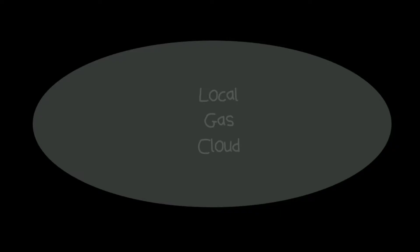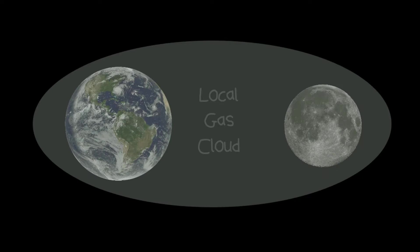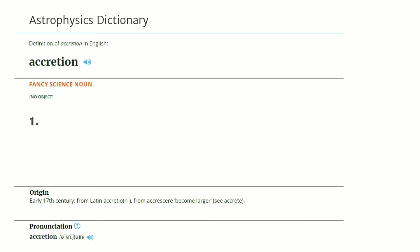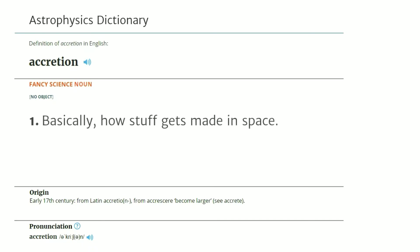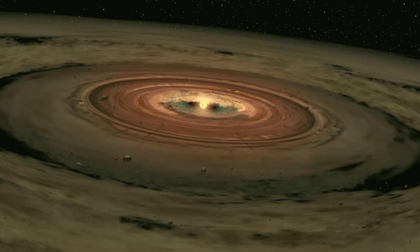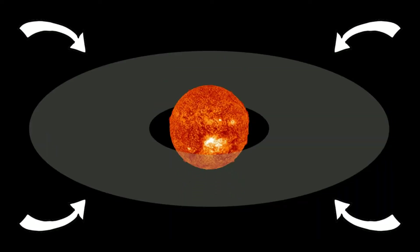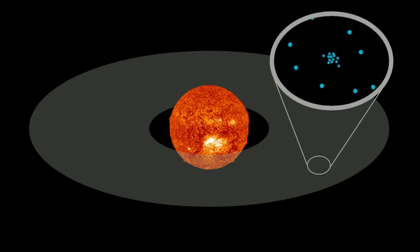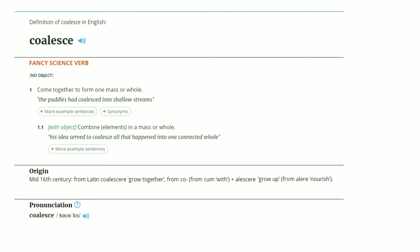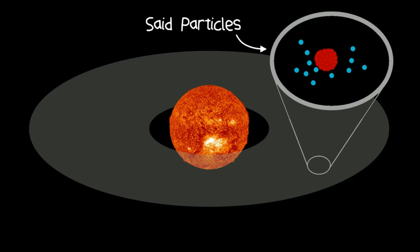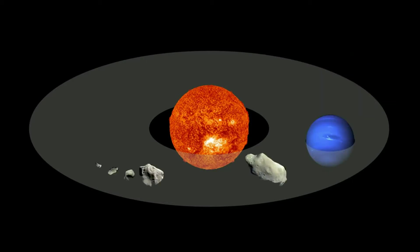Accretion Theory suggests the Earth and Moon formed from the same local gas cloud by a process called accretion. In astrophysics terms, accretion is basically how stuff gets made in space and where our solar system actually came from. It starts with a cold gas cloud, the centre of which heats up and collects mass, often forming a star, sometimes a black hole. This cloud then collapses into a disk which orbits the mass in the centre. Particles get bigger through the gravitational snowballing effect — the science verb for this being 'coalesce' — and said particles eventually get big enough to form planets, asteroids, and very small rocks.